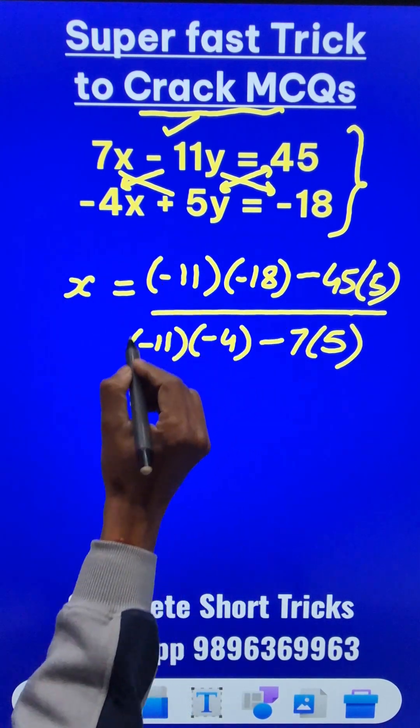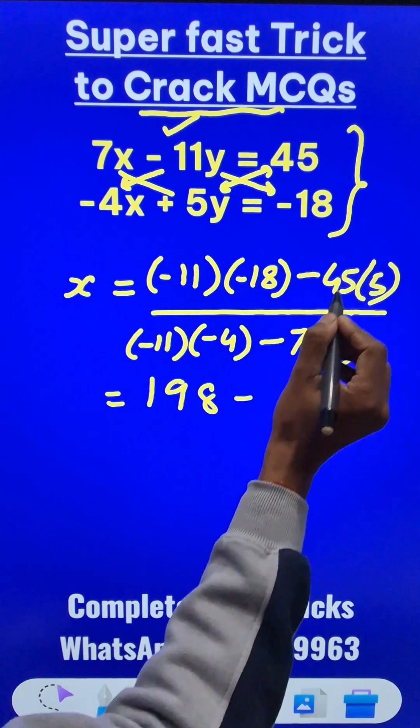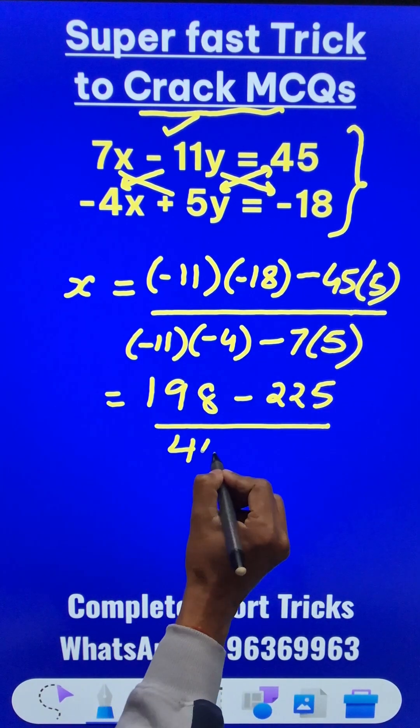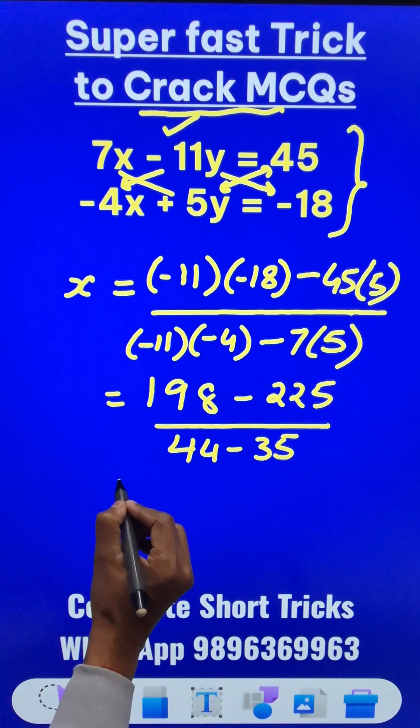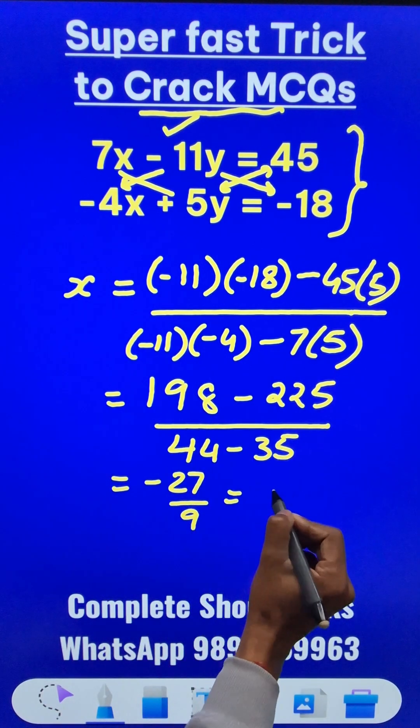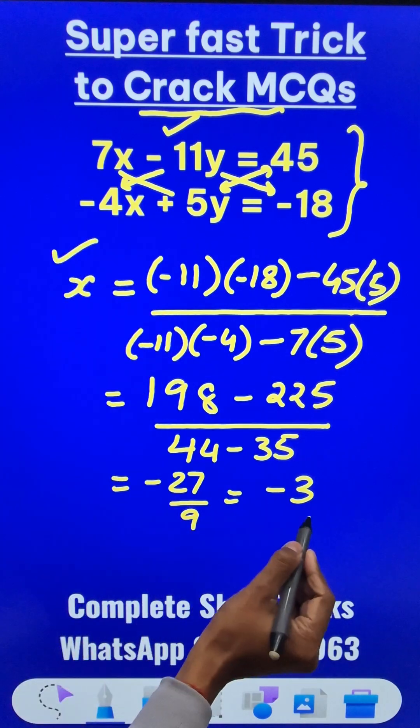Now what do we get here is, this becomes 198 minus 225, and in the denominator you get 44 minus 35. And when you simplify this, you will get negative 27 upon 9, which gives you negative 3 as the value of x.